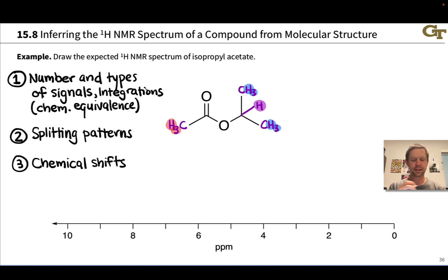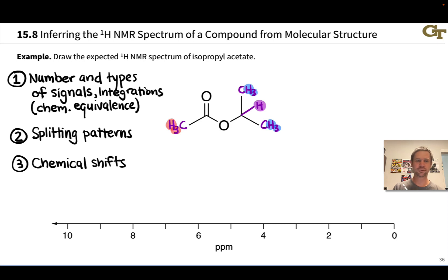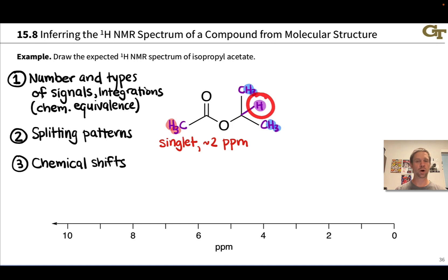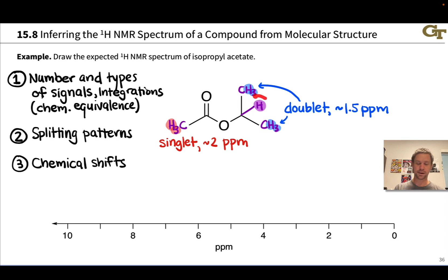Now, what about splitting patterns? Let's start with the acetyl methyl group. Look at the atoms connected to the neighboring carbon — this carbonyl carbon has no hydrogens. So these three hydrogens have no geminal or vicinal neighbors; therefore, we will see a singlet for this signal. It's adjacent to a carbonyl group, which is going to de-shield the hydrogens slightly. About 2 ppm is to be expected here, which you could get from a correlation chart. Moving on to the two isopropyl CH3s — both connected to the common methine carbon, which has one neighboring proton. So the signal for those six hydrogens will be split into a doublet by that one neighboring proton.